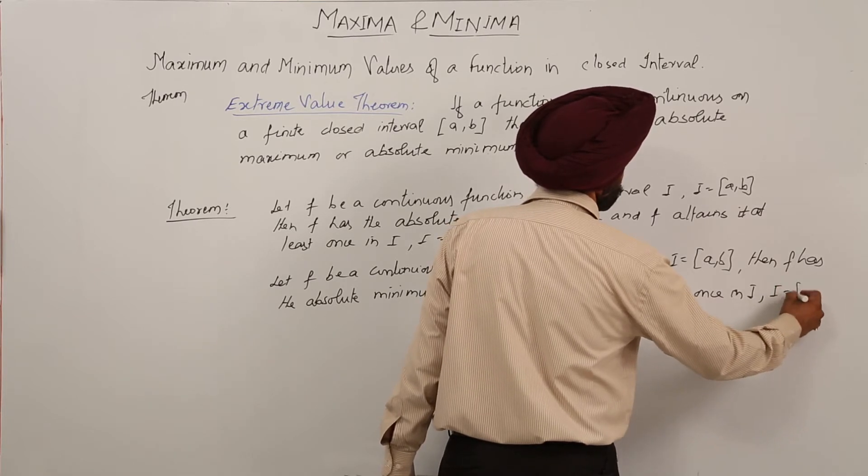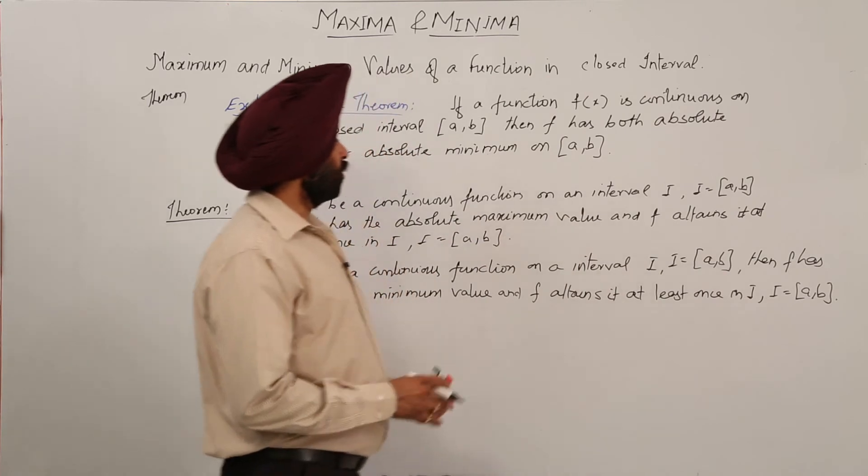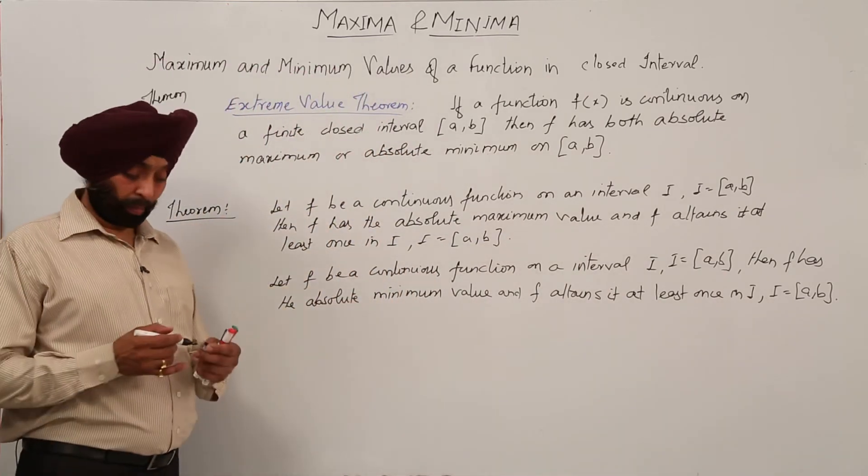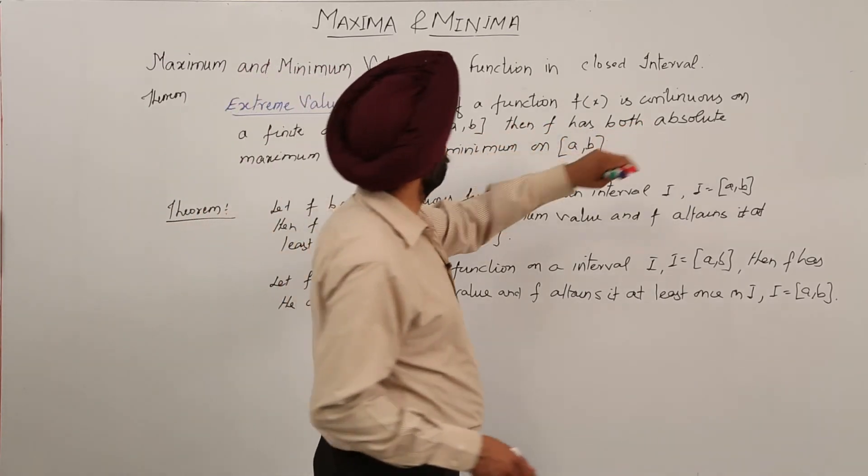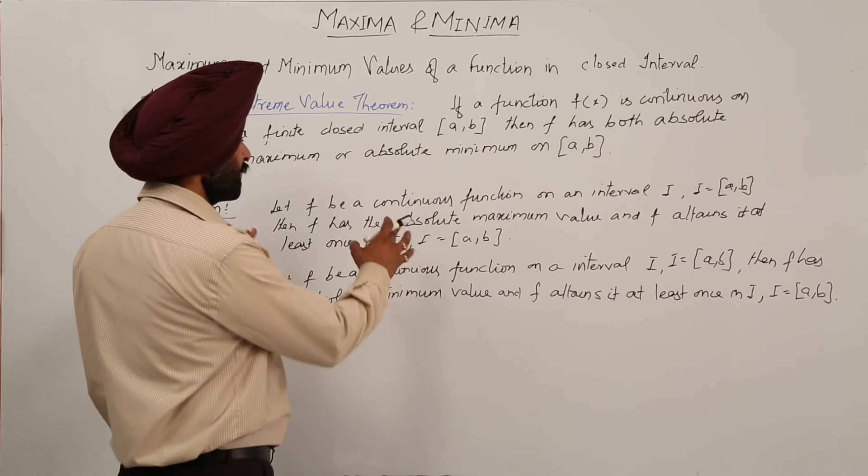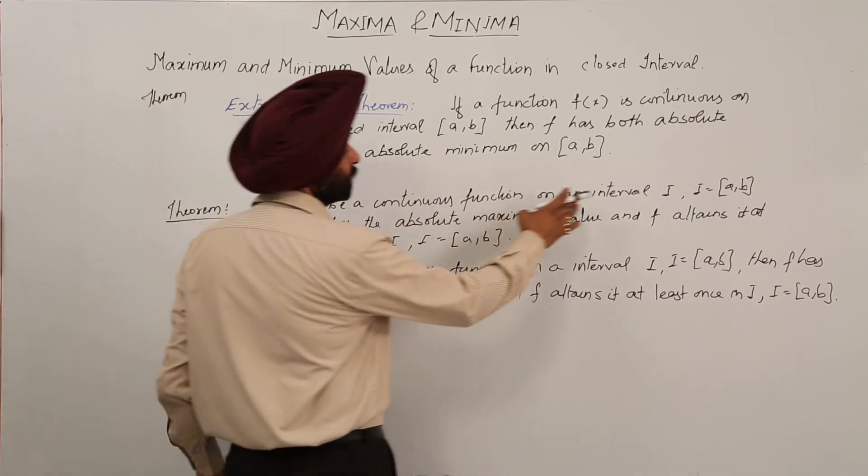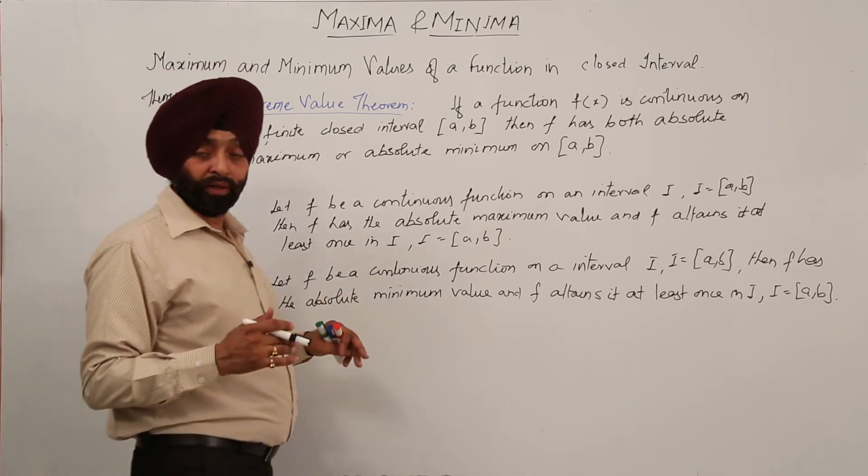where I is equal to [a, b]. I is the closed interval. Now both the definitions are same here. We have written even if a function f(x) is continuous on a finite closed interval [a, b], here I have given continuous functional interval I that is [a, b].